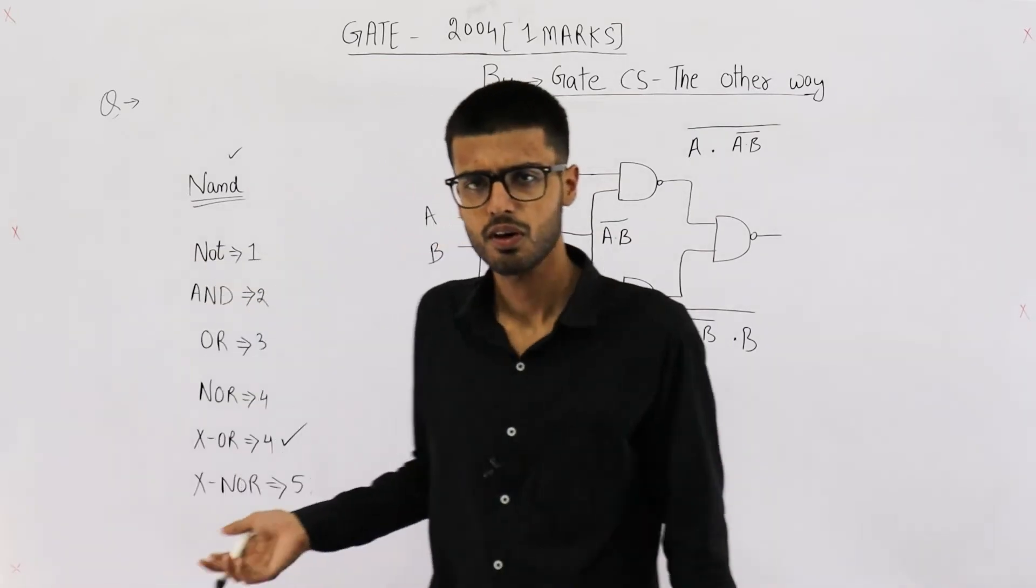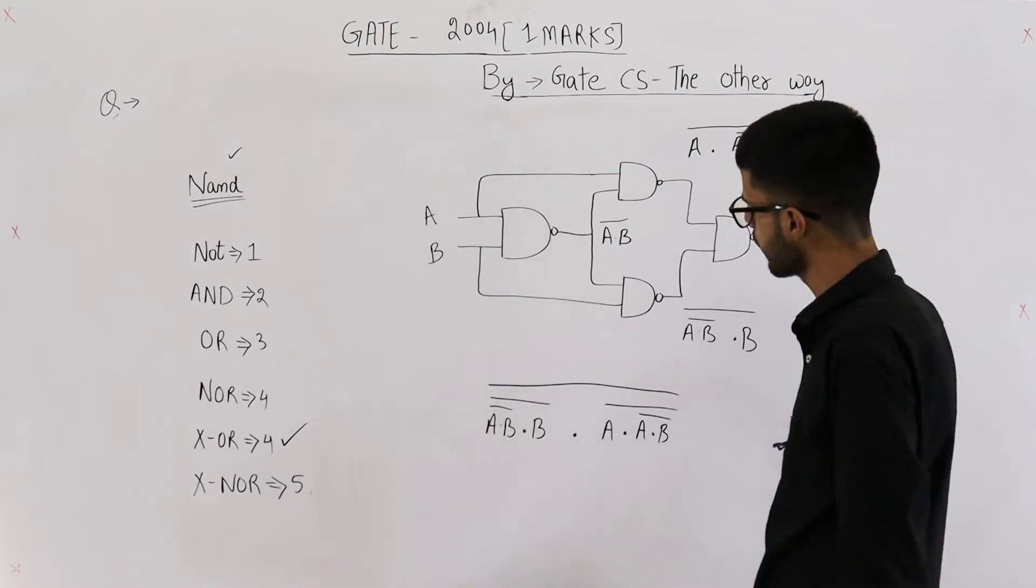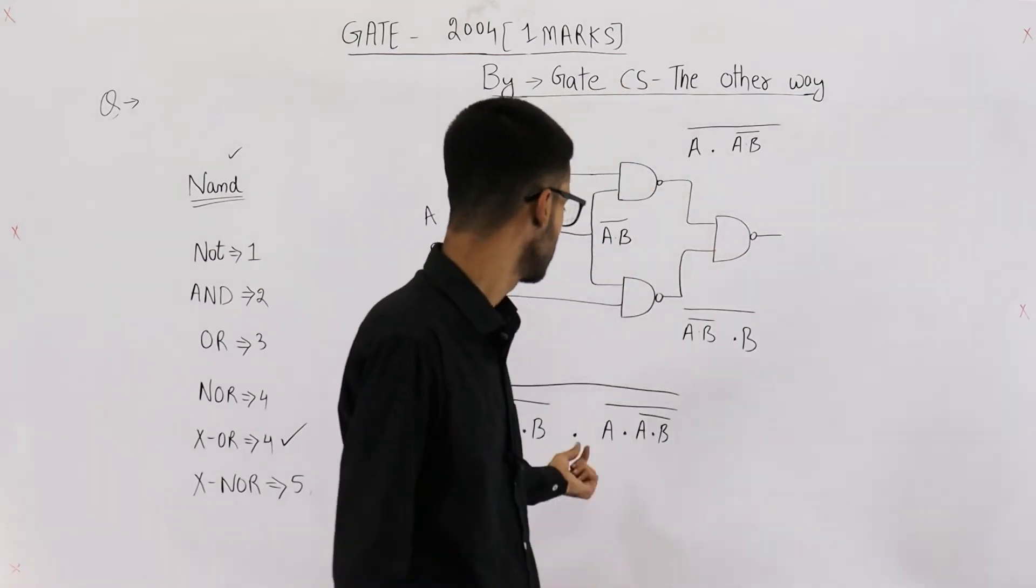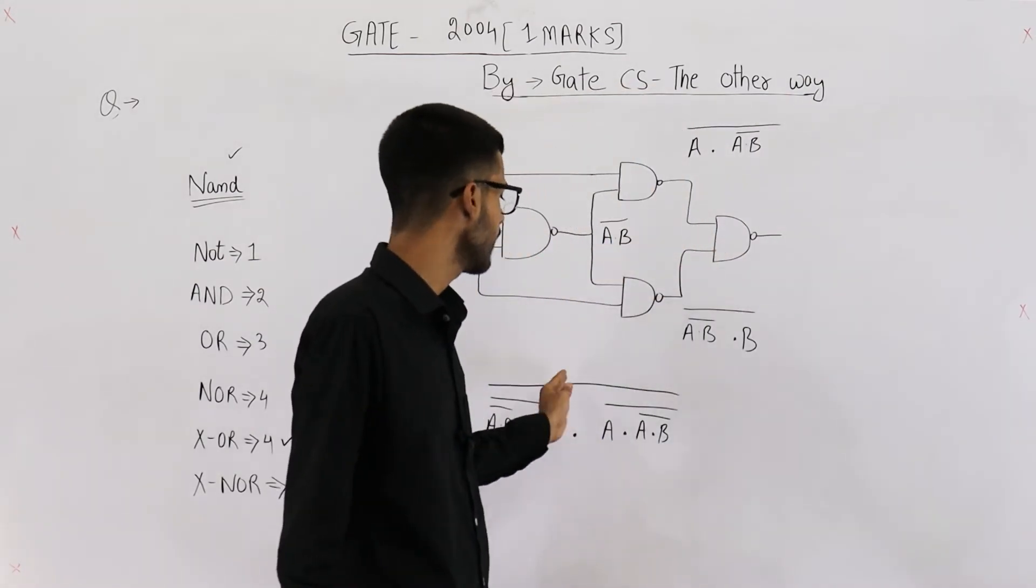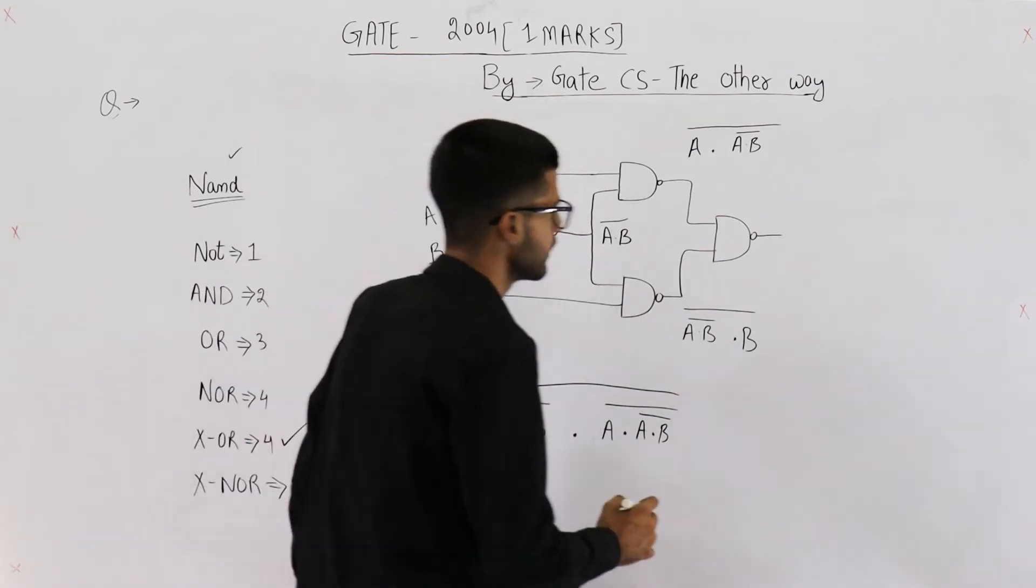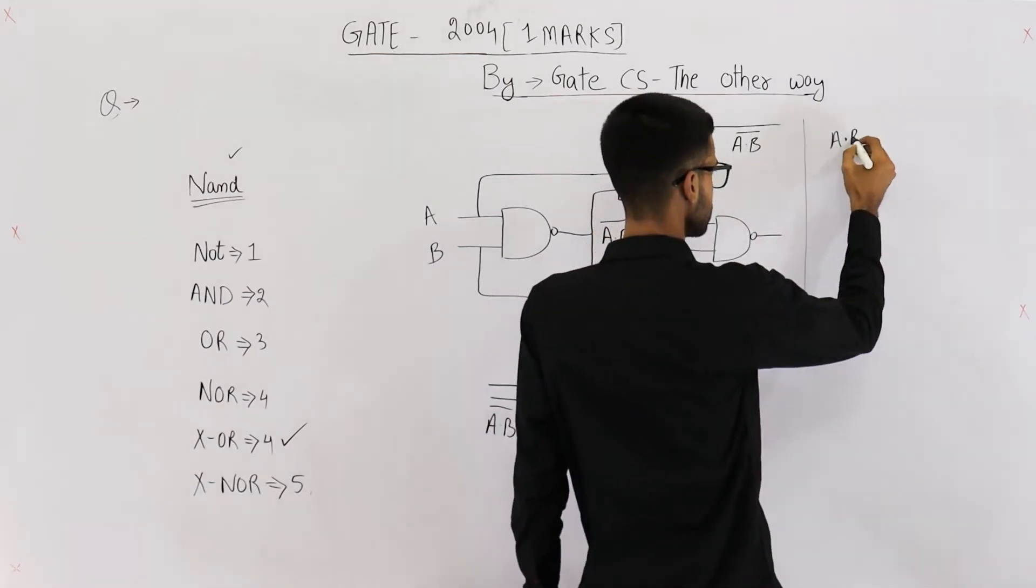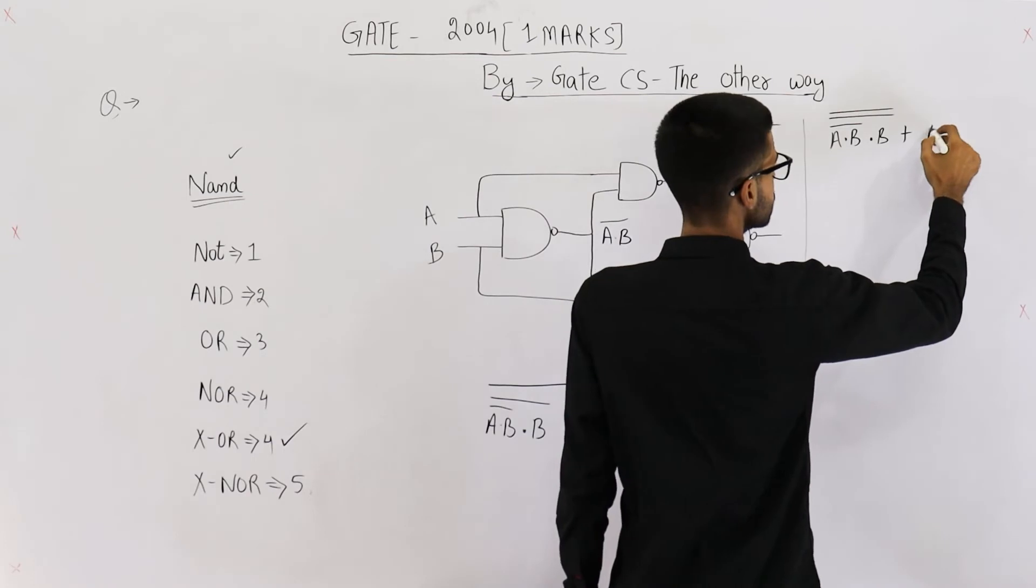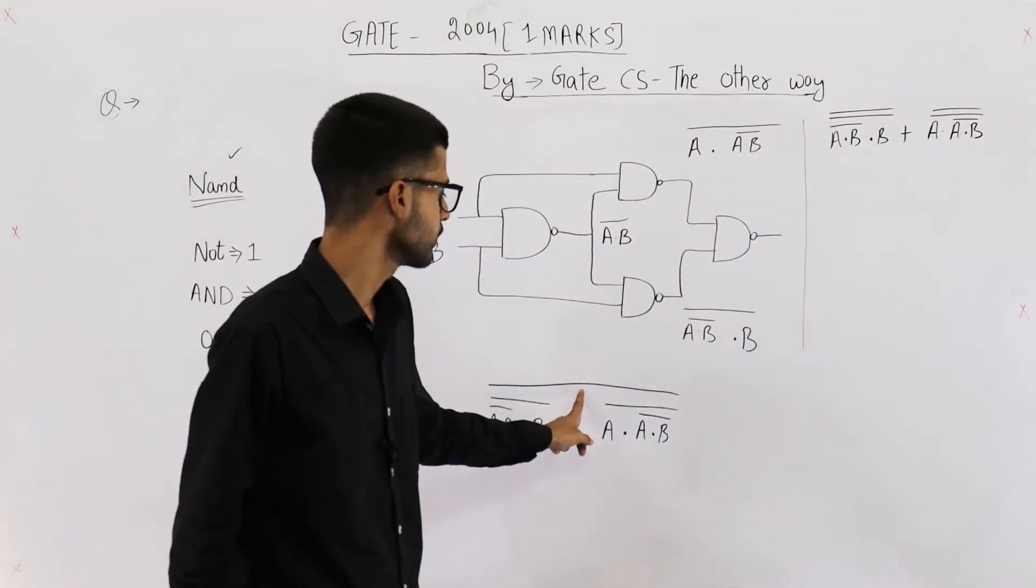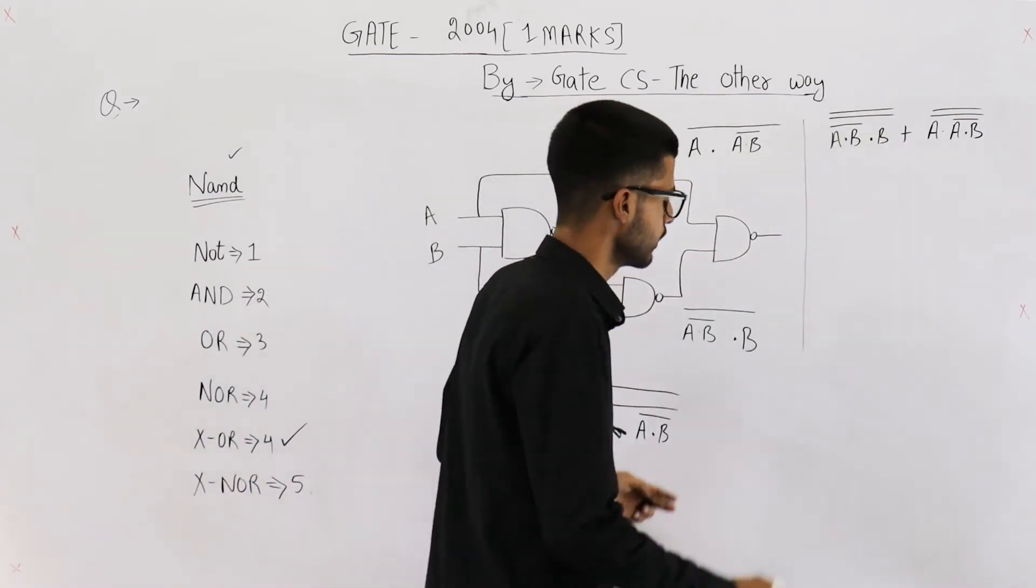Let's solve this. This expression can be solved using De Morgan's law. De Morgan's law says you just change this sign and split the complement on both sides. So what you are going to get is this complement split on both sides and this dot is changed to plus. Now you know double complement can always be ignored, so I'm ignoring double complement from here as well as from here.